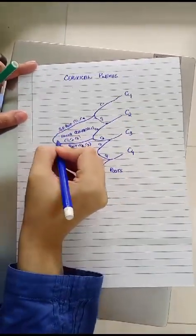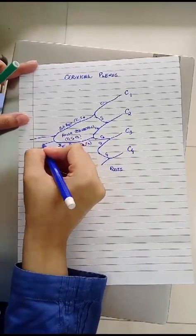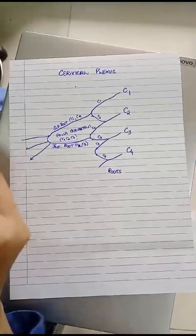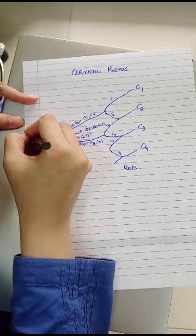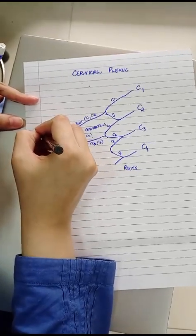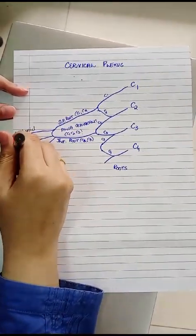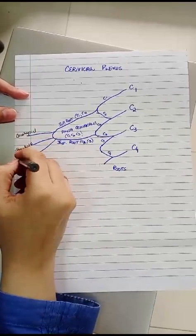The purpose of this loop is to supply the infrahyoid muscles, 3 out of 4 infrahyoid muscles. So these become the motor supply to the omohyoid, sternohyoid and sternothyroid.